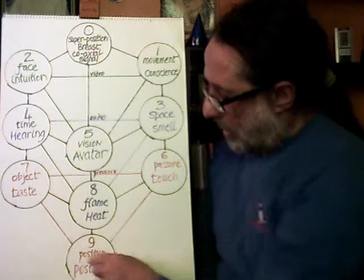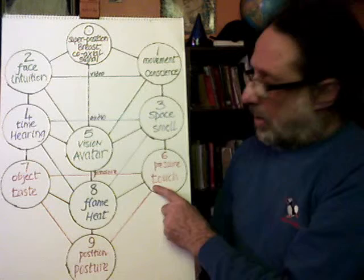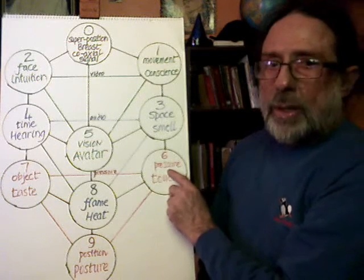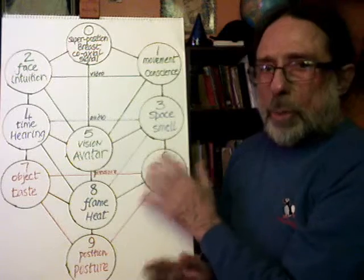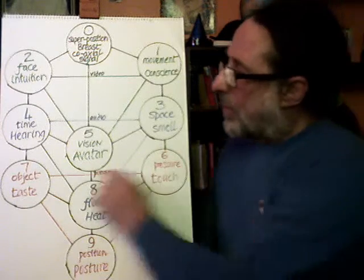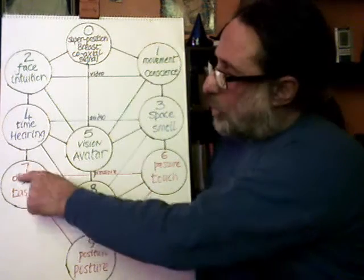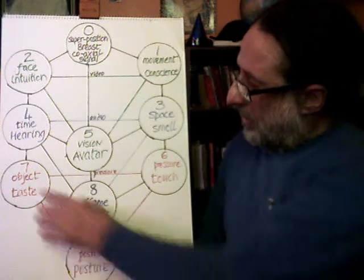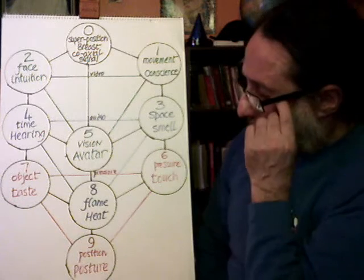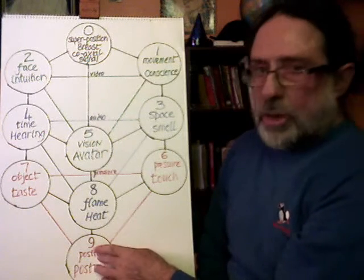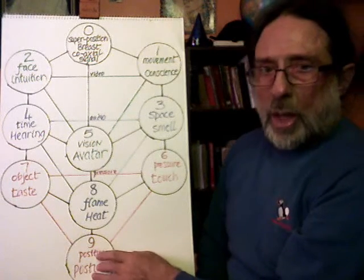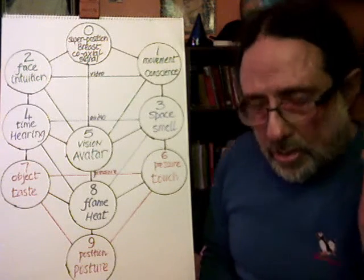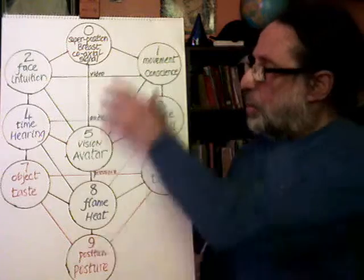And then we have the pressure triangle, the pressure signal. Pressure is touch, and then during touch shape, pressure map. And during pressure map is then an object. And that object is identified by taste, which our processes know. And then we have the actual position, which for the child in the child's synesthetic thing is the posture, position in this virtual reality.